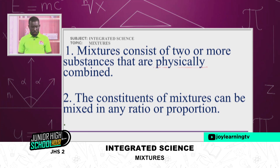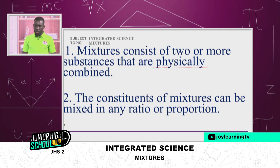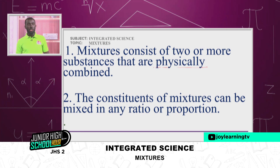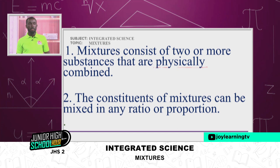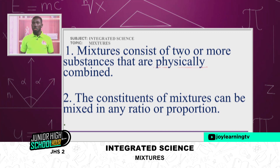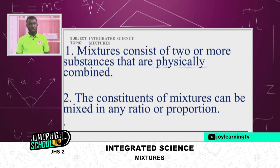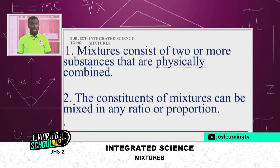The constituents of a mixture can be mixed in any ratio or proportion. I can choose to pick 20 pebbles against 5 pieces of chalk, or I can choose 100 pieces of chalk against 2 pebbles. In any form or ratio I would love to do it, a mixture can come in any ratio or form.